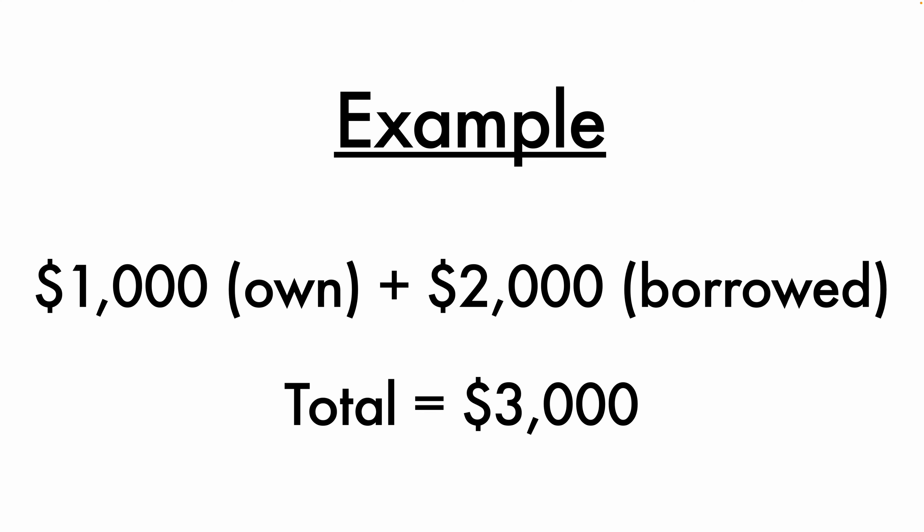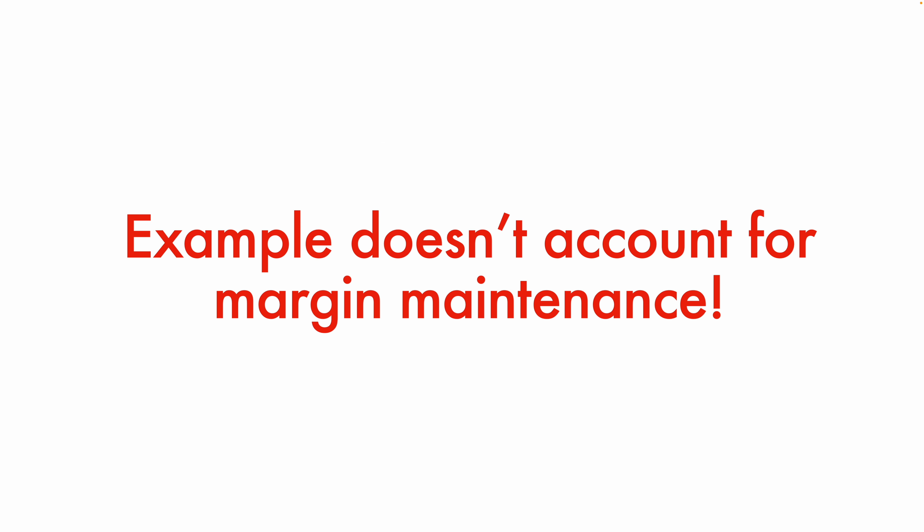A drop from $3,000 to $2,000 is roughly a 33% drop. This makes sense because you only put in $1,000 of your own money, which you just lost in the trade. The other $2,000 belongs to the exchange — it's money you borrowed that they'll take back if you don't have any other funds in your account balance.